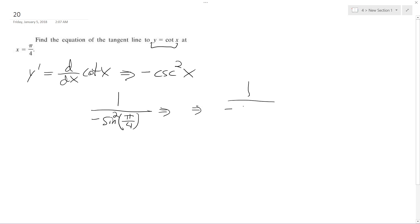So negative square root of 2 over 2, which gives me 2 over 4, which is equal to 4 over 2, which is equal to 2. So this is my slope, m.